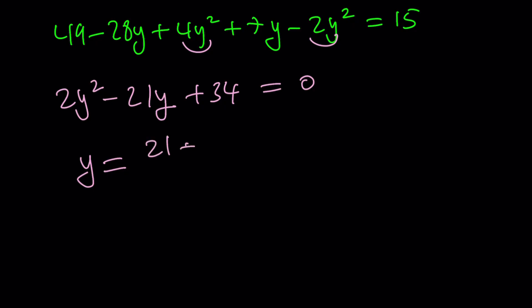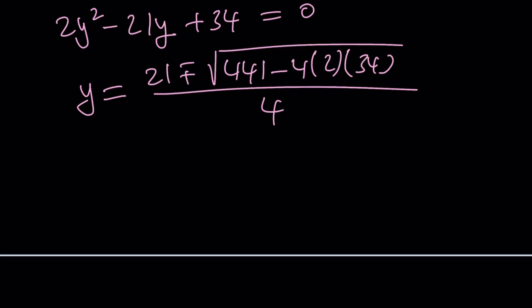Negative b plus minus the square root of b², which is 441. Did you know that? Memorized it. 21² - 4 × 2 × 34, and that is 8 × 34 and I believe that's going to be less than 441 divided by 2a, which is 4. Let's find out. 4 × 2 is 8. 8 × 34 is 272. So we're going to subtract 441 - 272. Please, please be a perfect square. Please. Thank you.